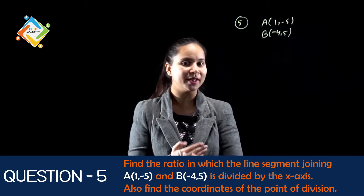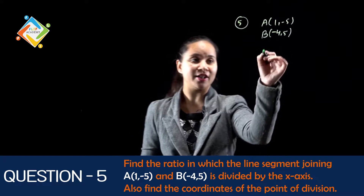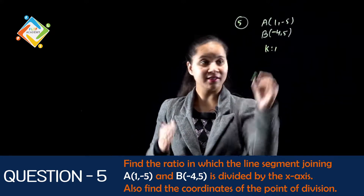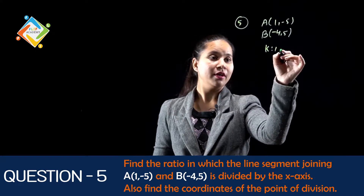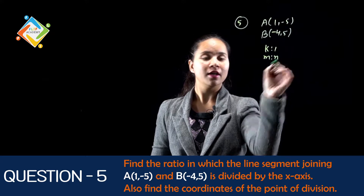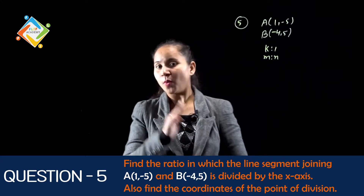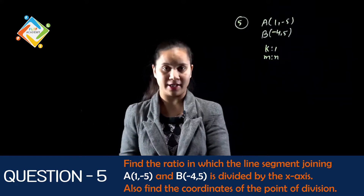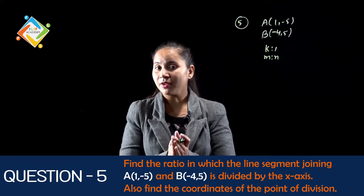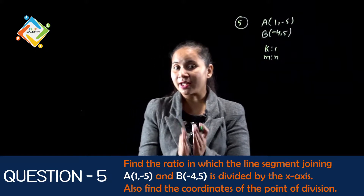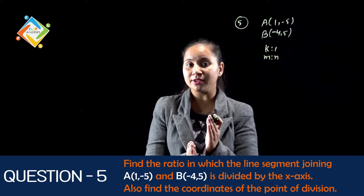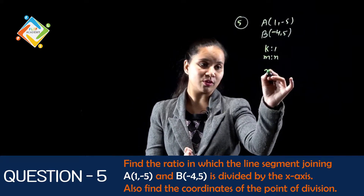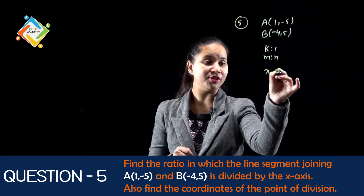हम यहाँ पर ratio जो है वो k:1 ले लेंगे, and this is M ratio N. अब जो point है वो x-axis पर lie कर रहा है, याने x-axis का मतलब के एक ऐसा coordinate जिसमें x की value तो x होगी बट y की value क्या होगी?